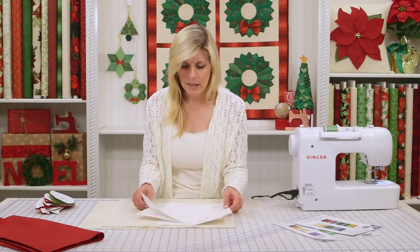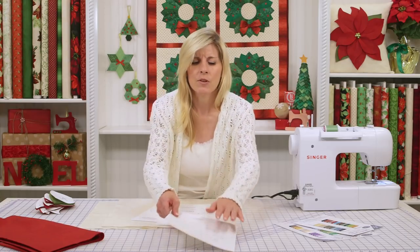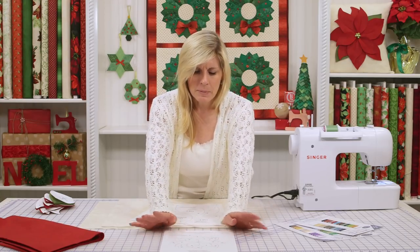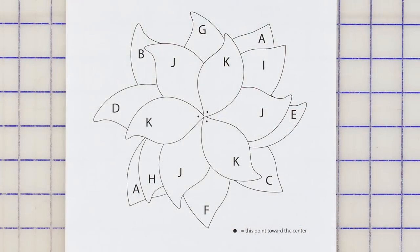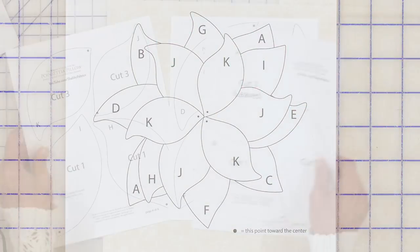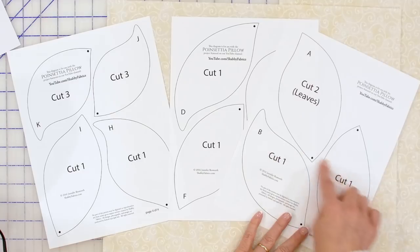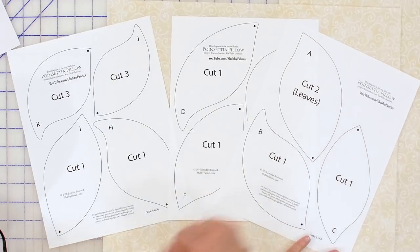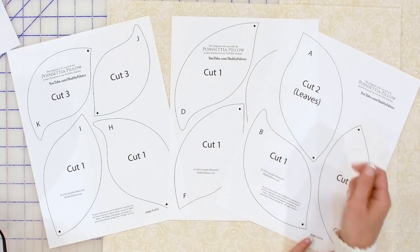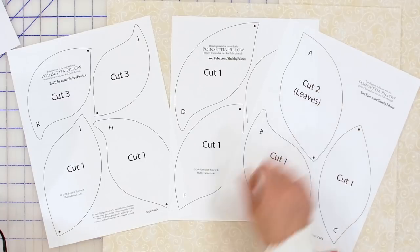Once you have these downloaded, this is kind of your first page, your overall what we're gonna do. And then you'll be printing out three more pages. You'll just cut those pattern shapes out on the line, and of course we're telling you how many you need to cut of each shape.